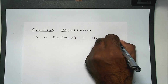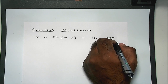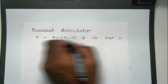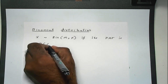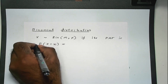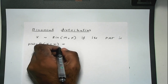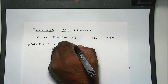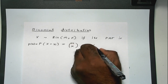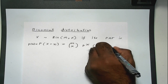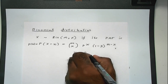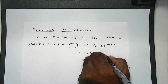Because it's a discrete distribution, we talk about the probability mass function, not the probability density function. The PMF is given by the following notation: little p(x), which is by definition m choose x, times p to the power of x, times (1 minus p) to the power of m minus x. And x goes from 0, 1, up to m.